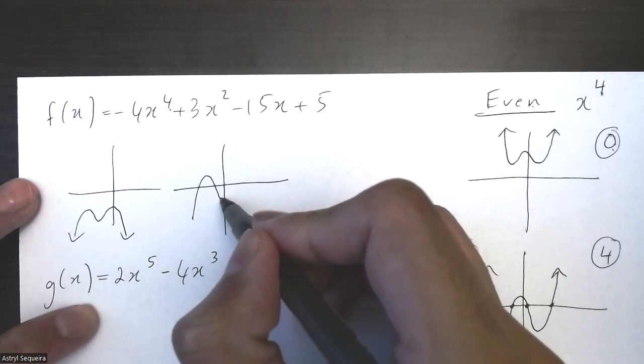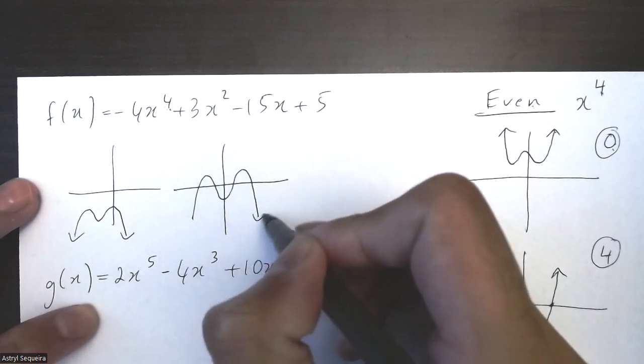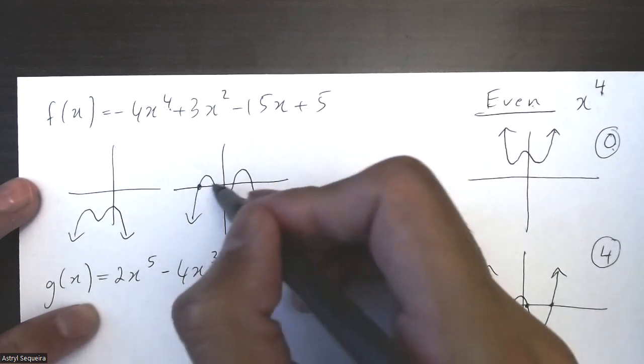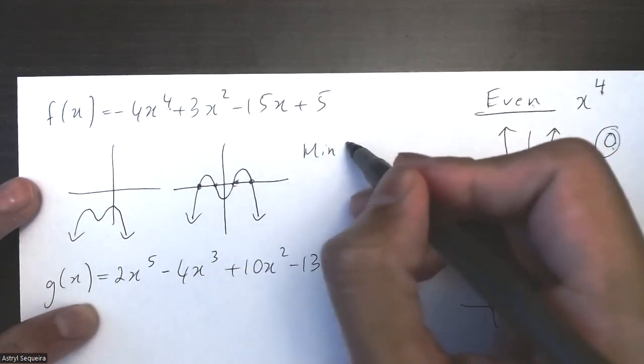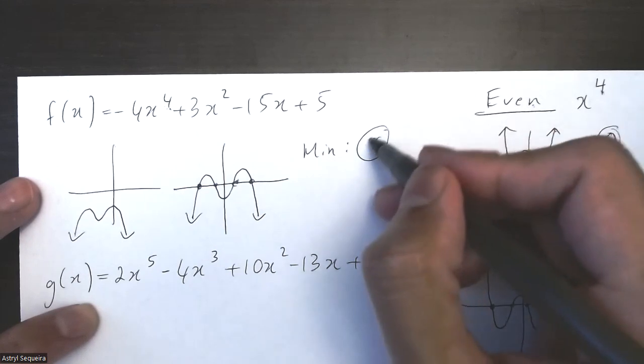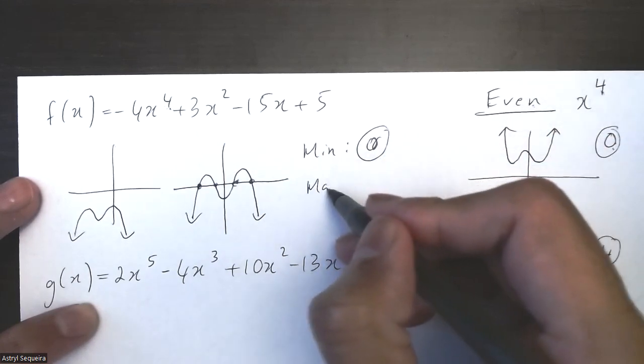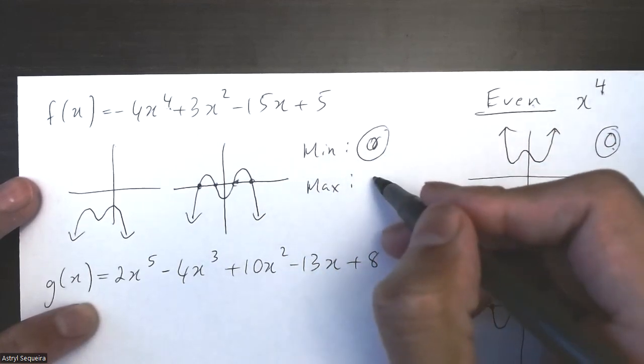Then I know it can also look like this, which is the maximum number of zeros, which is four. So my min is zero, my max is four.